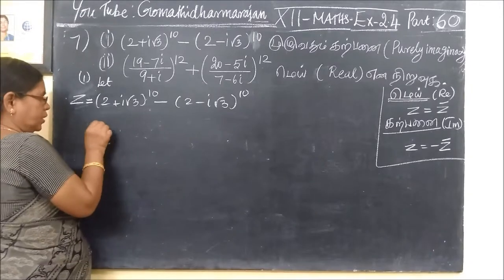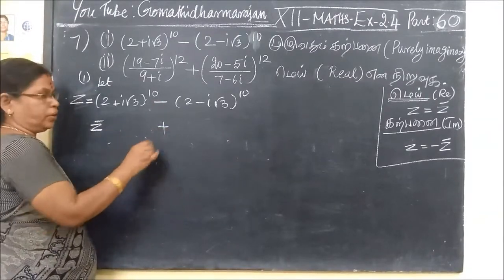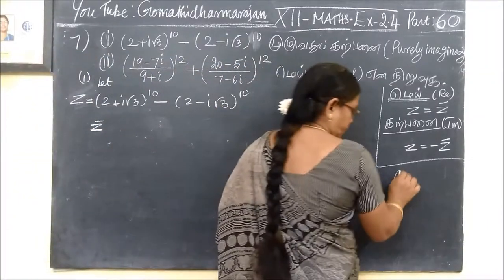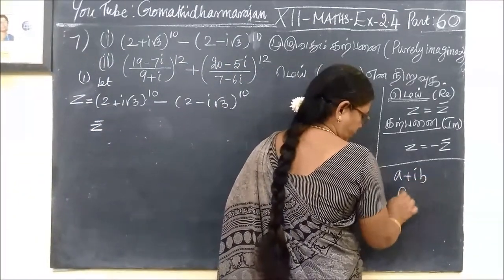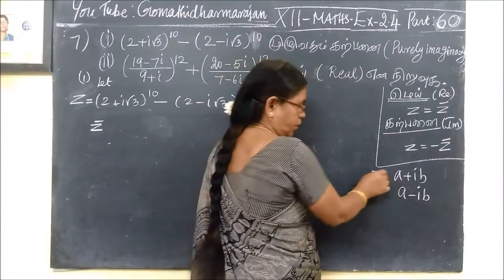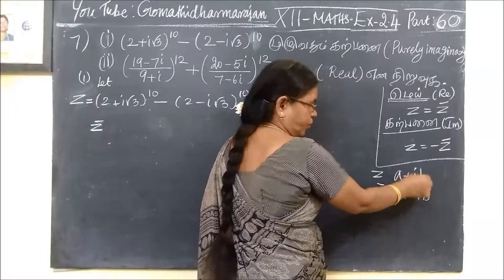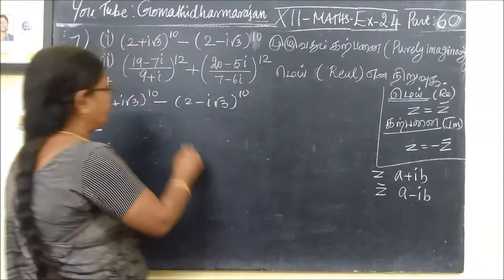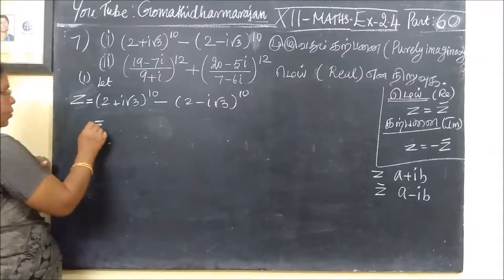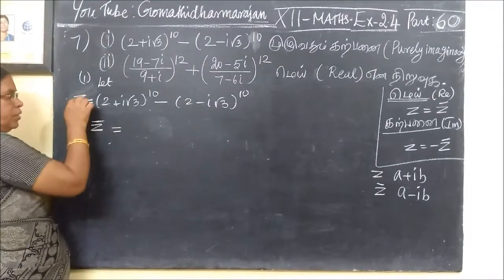Now, immediately Z bar is added. This is minus plus Z, it is equal to Z, so this is minus Z. It is minus minus Z. Then 1 plus i, b plus i, b. This means b is minus i, b plus i, b. This means Z bar.